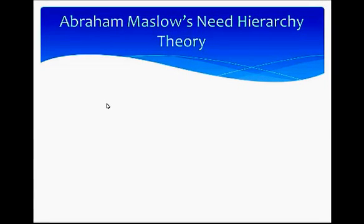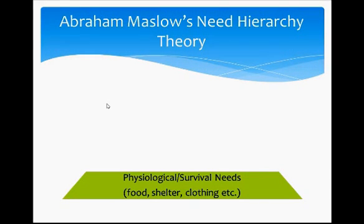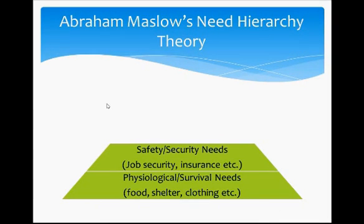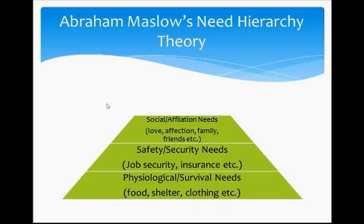The first and most fundamental theory of human motivation is Abraham Maslow's Need Hierarchy Theory. Maslow classified human needs into five hierarchical levels. He believed that human needs can be arranged in a hierarchical order — only after satisfying the first level of needs does one move to the next higher level. The first need is physiological or survival needs: food, shelter, clothing, etc. The second is safety or security needs: job security, insurance, etc. The third is social or affiliation needs: love, affection, family, friends, etc.